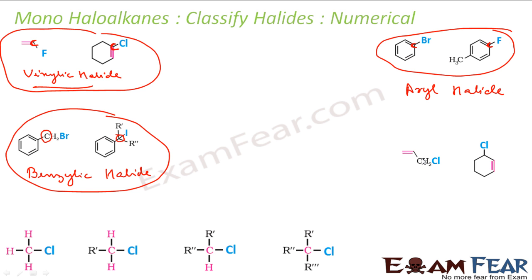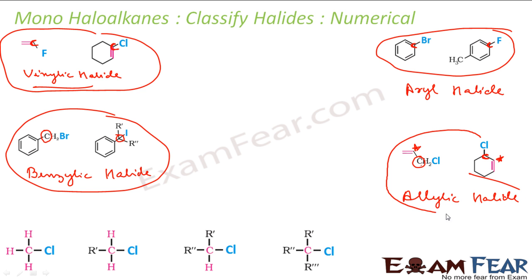Next examples: the hero carbon is attached to a carbon that is double-bonded (but not an aromatic ring). That carbon with the star mark is an allylic carbon. Since the hero carbon is attached to an allylic carbon, these are allylic halides.